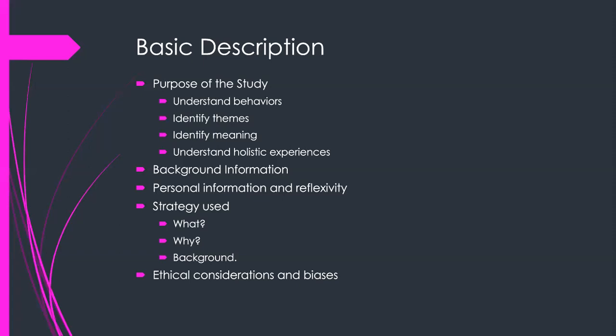In addition, we should identify the strategy or research design used for the qualitative study. Identifying what that design is and why the researcher chose it is very important, as well as background information on how that research design was developed and its intended purpose. Sometimes the research design closely matches the purpose of the study, and sometimes researchers use a design quite different from what is typically intended. If they use a different one, we would want to know why. Lastly, we would want to know any ethical considerations and biases, including that IRB permission was obtained to conduct the study.